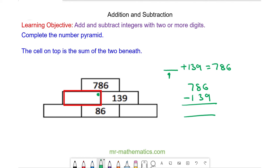I'm still using the column method. Now we can't do 6 take away 9 because 9 is bigger than 6, so we're going to borrow 1 from the next column. This becomes 7 and this becomes 16. 16 take away 9 is 7, 7 take away 3 is 4, and 7 take away 1 is 6. So this number is 647.